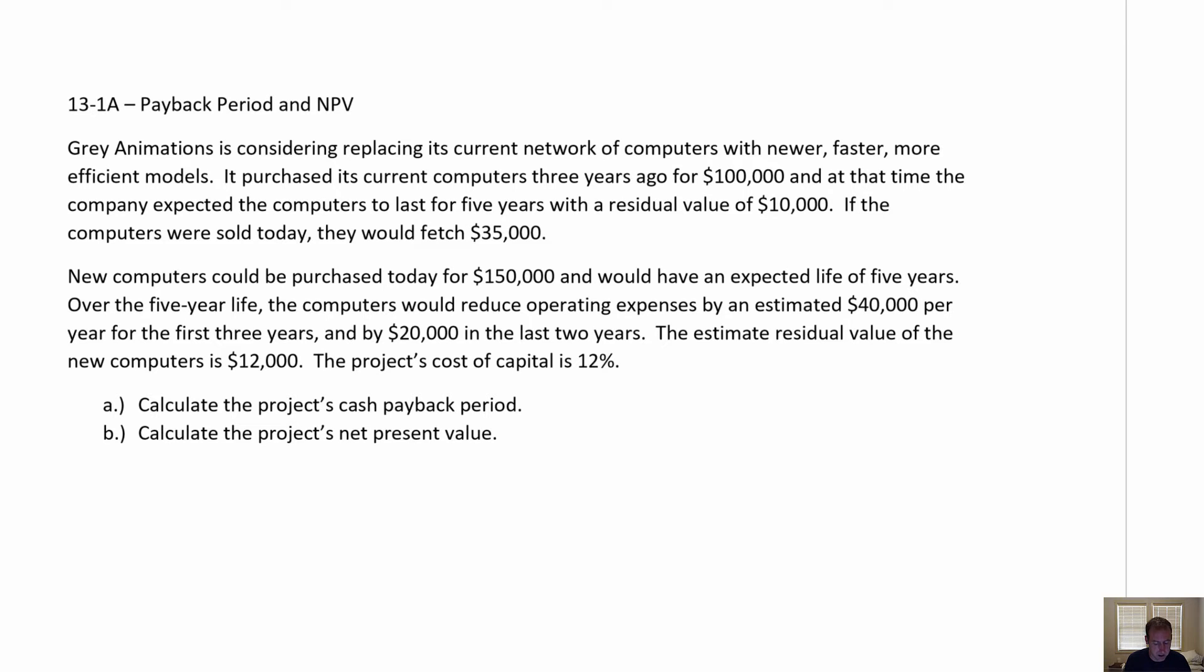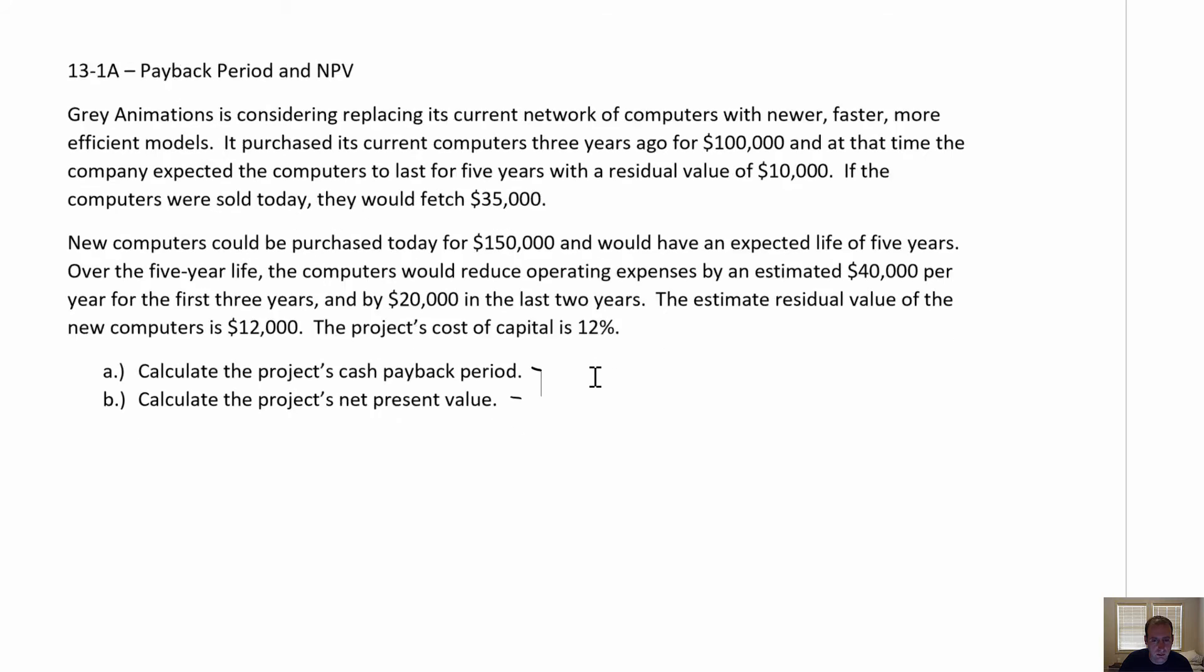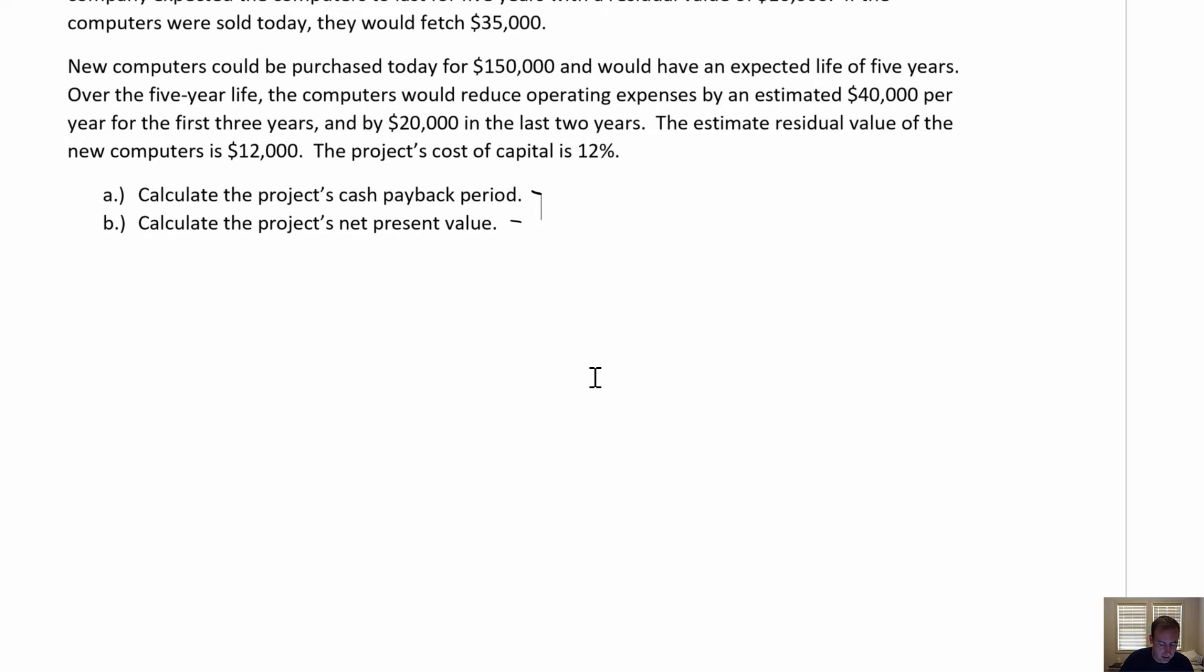It says calculate the project's cash payback period. So here we don't really worry about present value calculations. We don't worry about time value of money. So for this one, that 12% is going to be irrelevant. This one, though, is all about discounting those future cash flows and figuring out what the present value is. So let's examine, and actually, this will serve both parts of the question. I kind of want to just do like a cash flow timeline here.